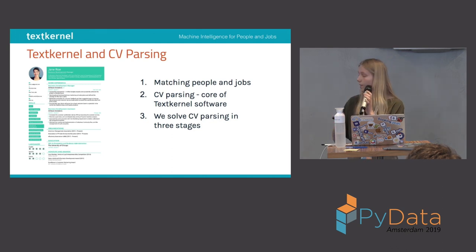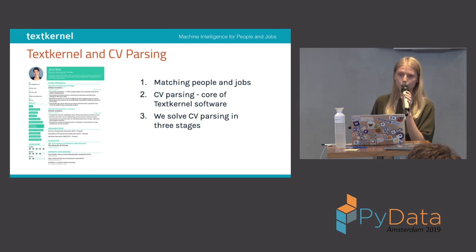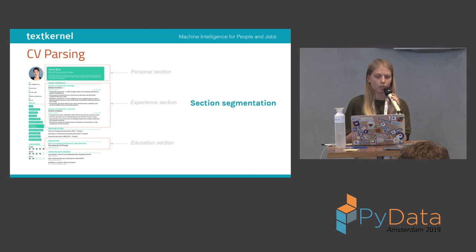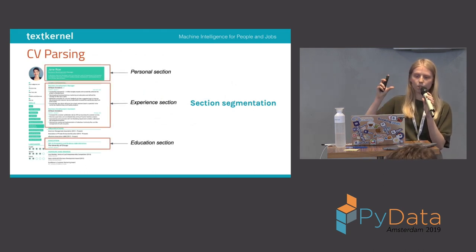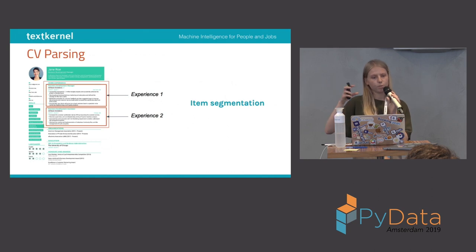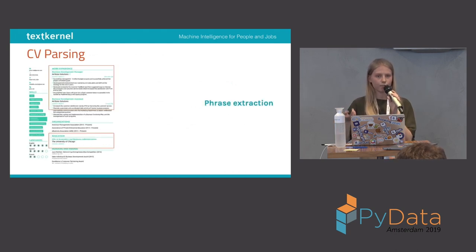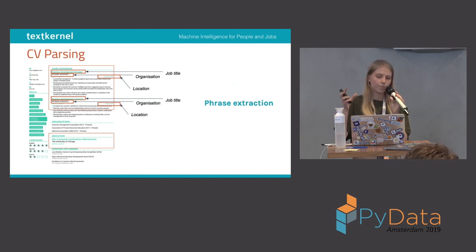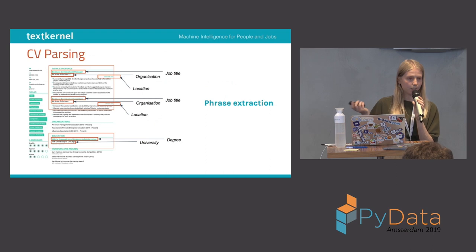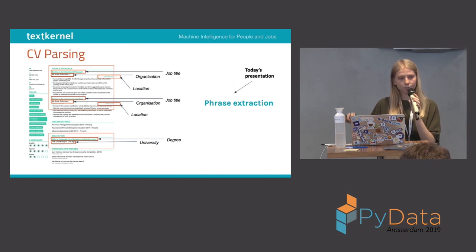I'm an intern at TextKernel, where we match people and jobs, and CV parsing is the core of our solution. We solve CV parsing in three stages: first, section segmentation, where we extract sections like personal, experience, and education. Then item segmentation, where within each section we extract items — for example, first and second experience entries. Finally, phrase extraction, where we extract phrases like job title, organization, location, degree, or university. This talk focuses on phrase extraction from the experience section.